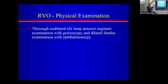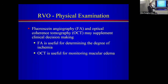We also look at the slit lamp to make sure there are no vessels on the iris, especially in cases of CRVO or hemiretinal vein occlusion, as enough VEGF can be produced to induce rubeosis and neovascular glaucoma. Useful testing includes fluorescein angiography (FA) to determine degree of ischemia and OCT to monitor macular edema, especially during treatment with anti-VEGF injections or laser.